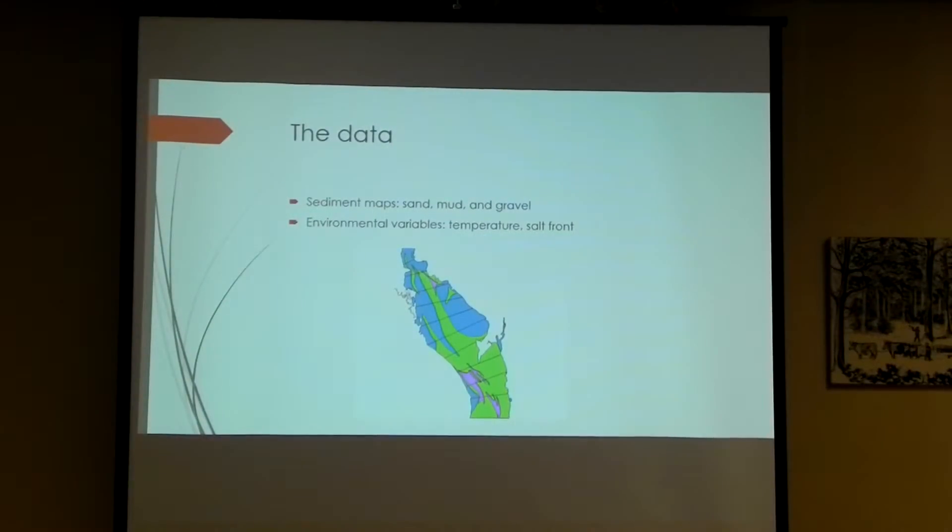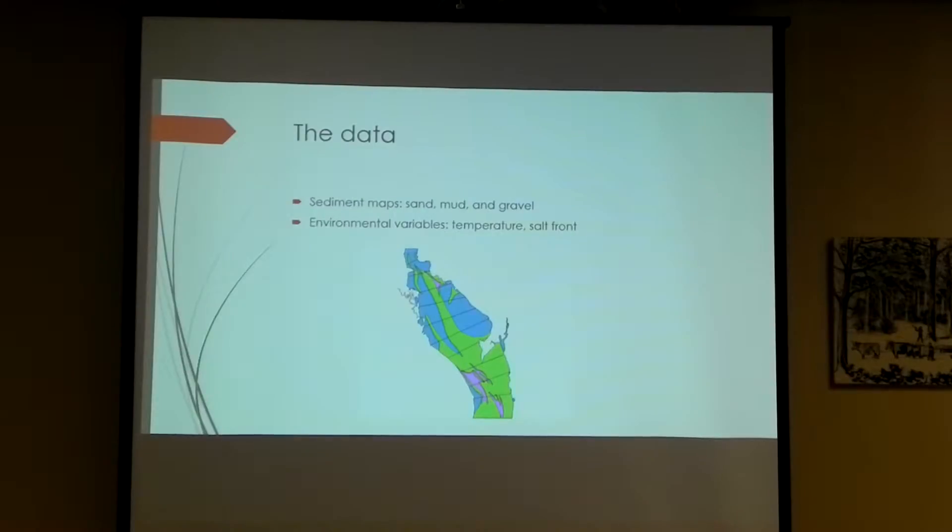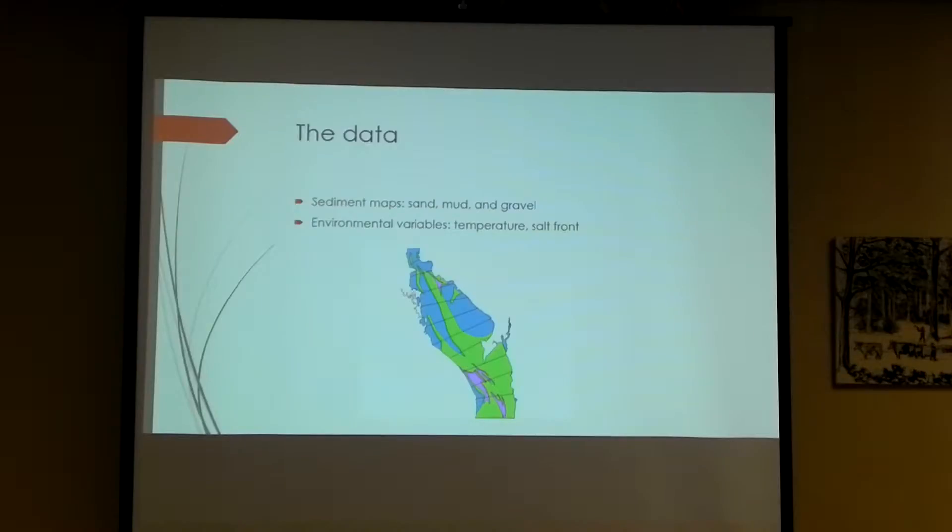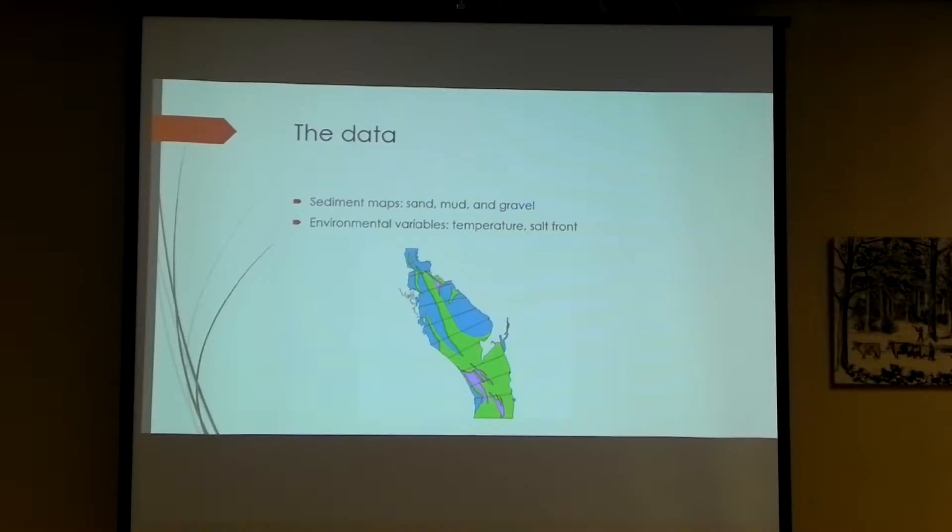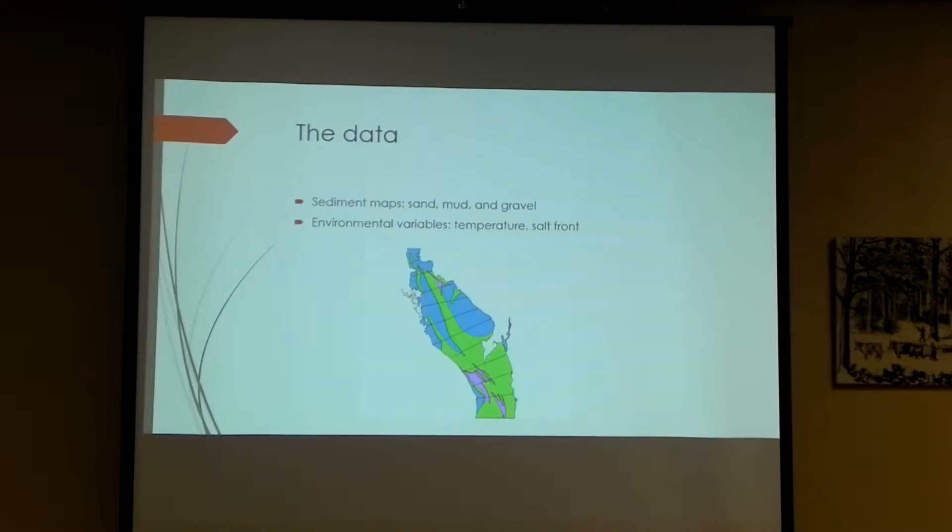What we also have, we have data on the habitat as well. We have sediment maps, which for the purpose of this study can be very, very detailed sediment maps. Several different types of sediment environments and sediment types. For the sake of this study, we used mud, sand, and gravel as our sediment descriptions here. And this is just an example of what that looked like when you're looking at it on your screen. And then we also have a few other environmental variables, such as water temperature and the location of the salt front, up and down the Hudson.